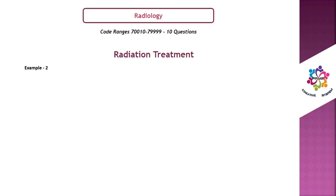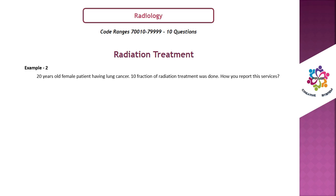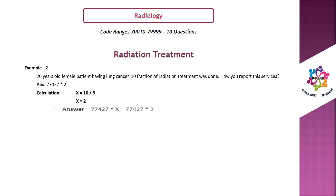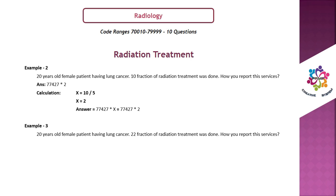Example 2: 10 fractions of radiation treatment. The answer is 77427 × 2. Calculation: x = 10 ÷ 5 = 2. So the answer = 77427 × 2.